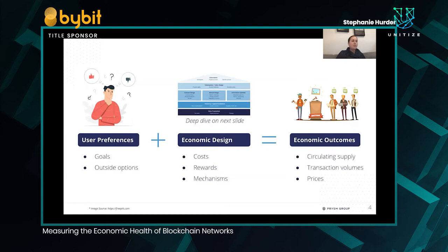It's important to recognize that most projects, either explicitly or implicitly, have some set of economic outcomes that they want. It could be that they want 100 validators, 50 dApps, or they want their users to interact with them every month for a year. These are really a combination of the preferences and constraints of the people coming to use your platform and the economic design that you've chosen.